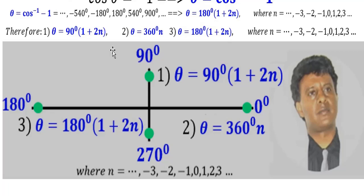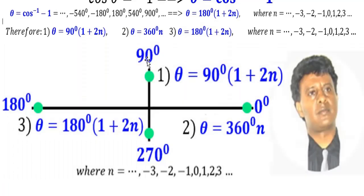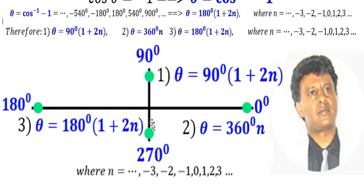Here it is in picture format. Solution one: 90 degrees and 270 degrees and all their co-terminals, which can be written as 90 degrees times (1 plus 2n). When n is 0 it is 90 degrees, when n is 1 it is 270, and it alternates between 90 and 270 as n increases.